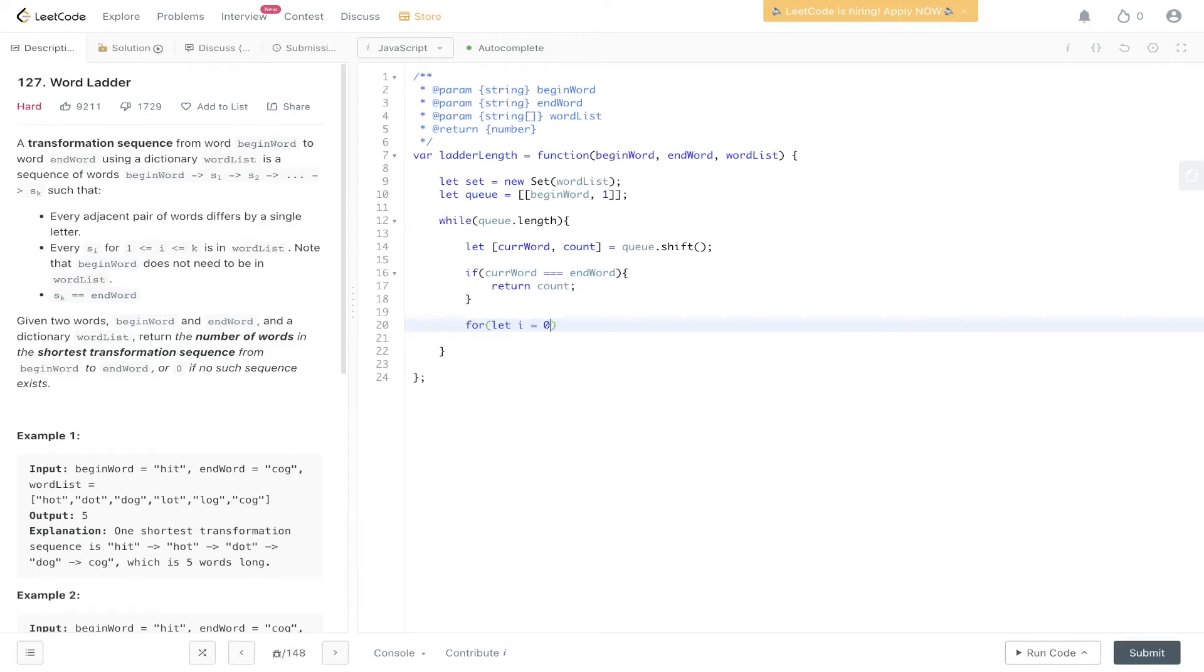We're going to loop through where i is equal to 0, i is less than 26. So 26 characters within the alphabet. We're going to loop through j now. So j is less than current word dot length, j plus plus.